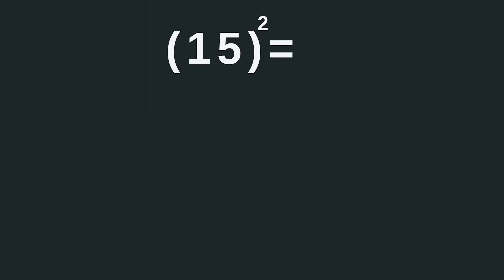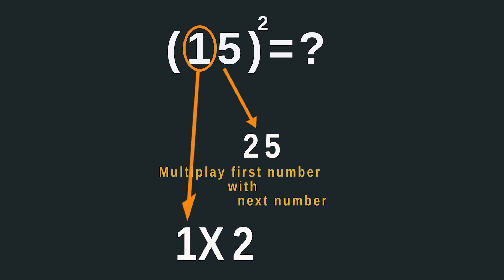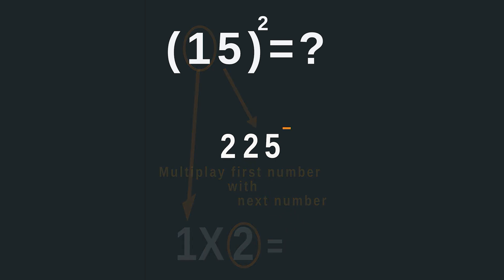Let's start with the number 15. Since this number is ending in 5, we can square the last digit, which is 25. Then multiply the first digit with its next digit. Here the first digit is 1 and its next digit is 2. So multiply 1 with 2, which equals 2. Now piece the answers together to get your answer, so 15 squared is equal to 225.